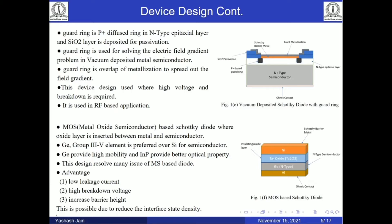Now moving to the next important device design — the MOS-based Schottky — metal oxide semiconductor, where an oxide layer is inserted between the metal and semiconductor. This reduces the interface state density, which is a non-ideal effect in the metal-semiconductor type. By reducing interface state density, we observed higher barrier heights, high breakdown voltage, and low leakage current. So it is a prominent device used at the current time.